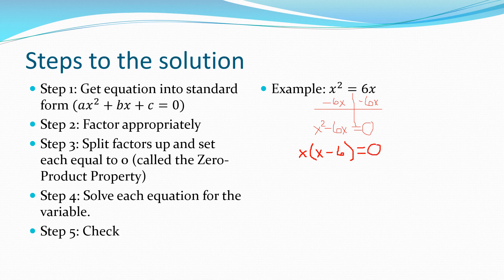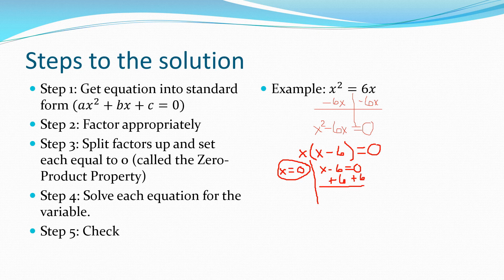That equals zero and is now factored completely. Now I'm going to use the zero product property. The easy way to remember it is the three S's: split, set, solve. I split the factors up and set each equal to zero: x equals zero, and x minus 6 equals zero. I solve each factor — x equals zero is already done; for the other I add six to both sides.